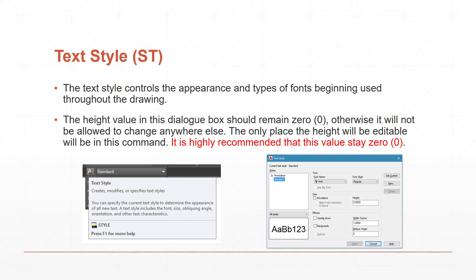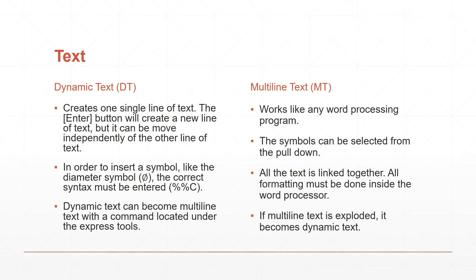Now for text and attributes. When you're building a text style you're going to see a dialog box appear, and I highly recommend that you always keep your height set to zero. If you change this height it's going to be a permanent fix, and when you're doing dimensions, leaders, or anything else using this text style it's always going to be stuck at that height. You also have two types of text: dynamic text, also referred to as single line text, and multi-line text. With dynamic text you'll have to hit Enter when finished — do not hit Escape. With multi-line text it works more like a word processor with a close button at the top.